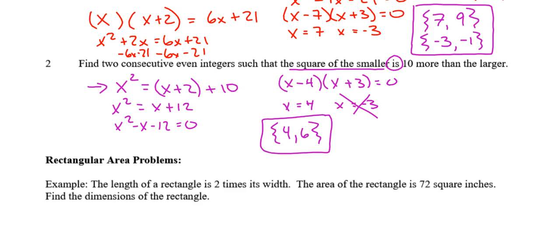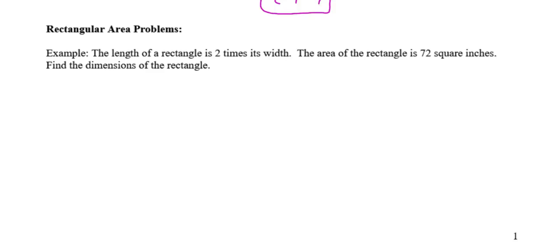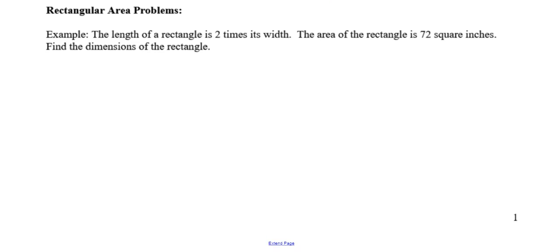Let's continue on. Let's talk about rectangular area problems. The length of a rectangle is two times its width. The area is 72 square inches. Find the dimensions. It would be useful to draw a rectangle. If I call this L and this W, then I've established the length and width. It tells me the length is two times the width, so L is 2W. Area equals L times W.